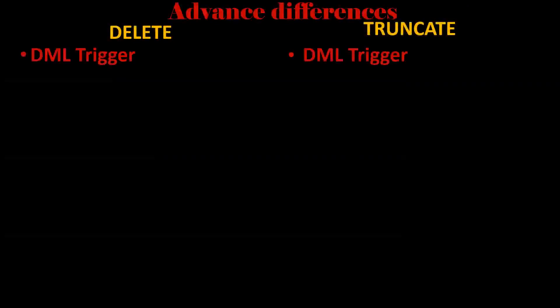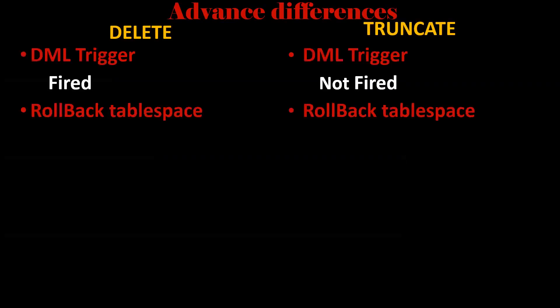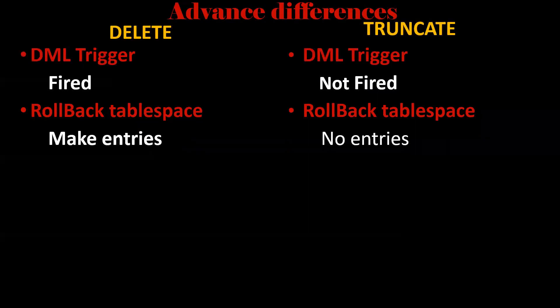If a table has any DML trigger on it, when you perform a DELETE operation the DML trigger will be fired. When you perform a TRUNCATE operation, the DML trigger won't be fired. Regarding rollback tablespace: if you perform a DELETE operation, each and every record will make an entry into the rollback tablespace, whereas no entries will be made when you perform a TRUNCATE operation.